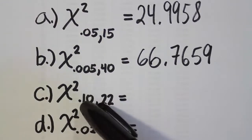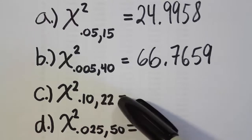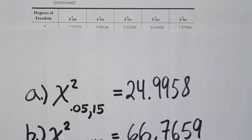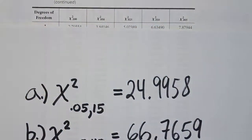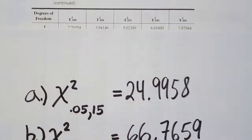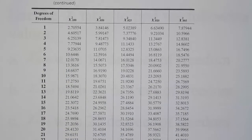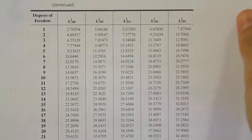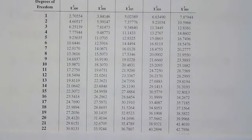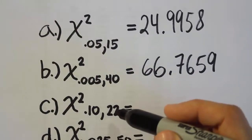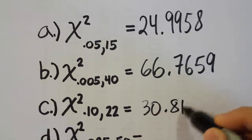Part C asks for chi-squared at 10% alpha with 22 degrees of freedom. The 0.10 column is the very first column on the table. Moving down to 22 degrees of freedom — again adjusting the view slightly — we find the value 30.8133. So chi-squared at 10% with 22 degrees of freedom is 30.8133.